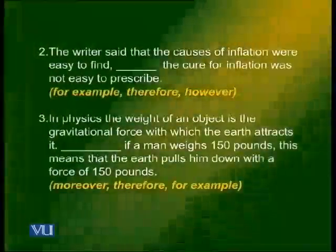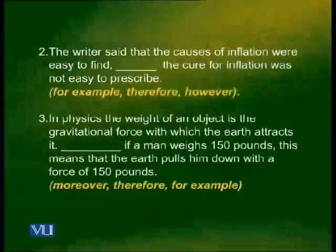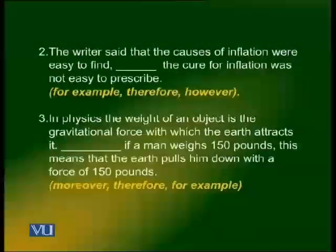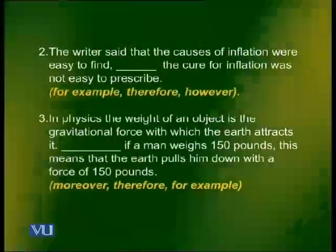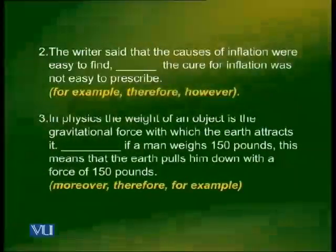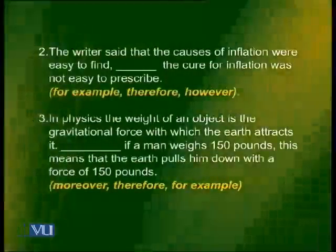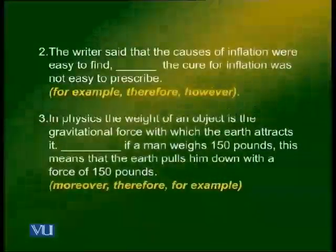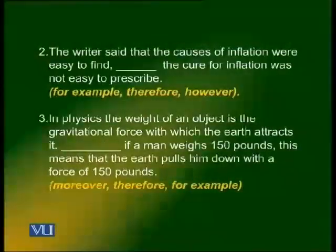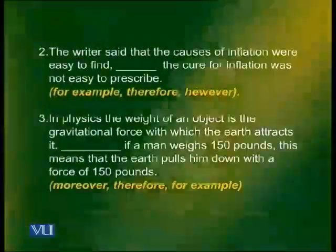Number three: in physics, the weight of an object is the gravitational force with which the earth attracts it. [blank] if a man weighs 150 pounds, this means that the earth pulls him down with a force of 150 pounds. Which transition signal is required? You can use for example.